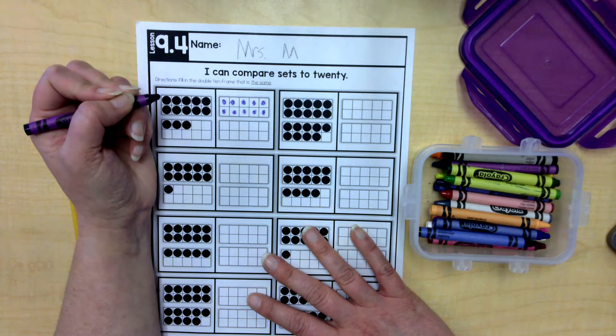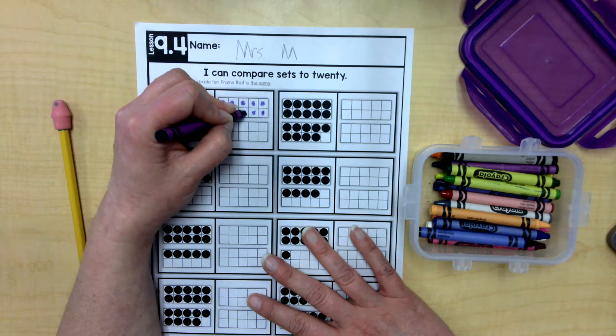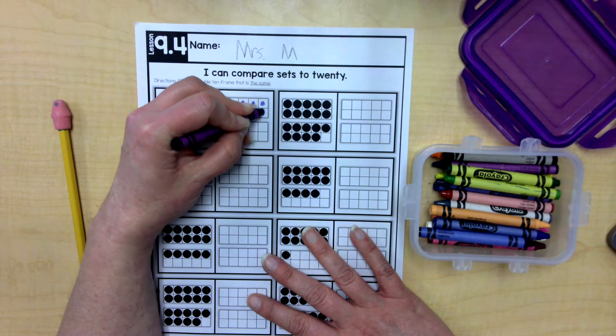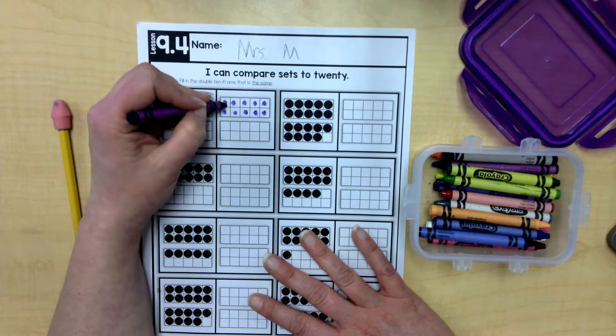I know it's 10 because it's a 10 frame. Get it? 10 frame. And there are 10 boxes in the 10 frame. I don't need to count them. There's 10.